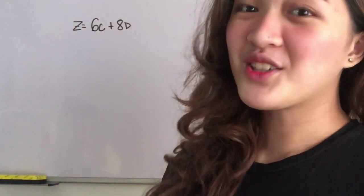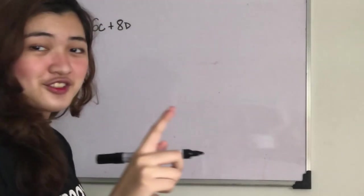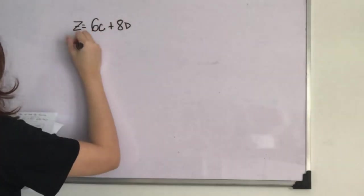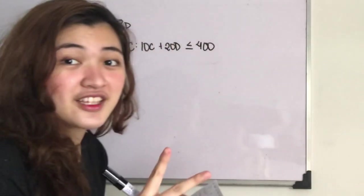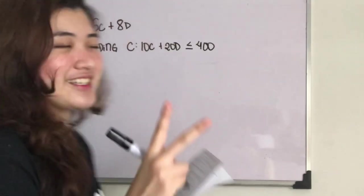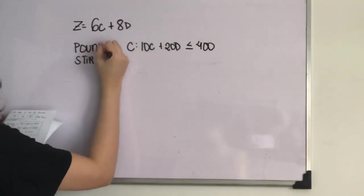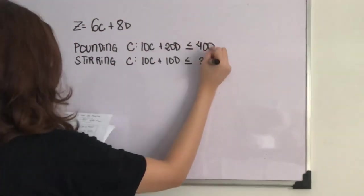Now let's go to the constraints. For the first constraint, pounding. For the second constraint, stirring. And for the last constraint, the non-negative constraint. It simply tells us that it is impossible to produce a negative number of units.